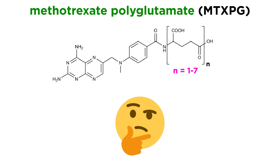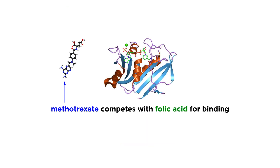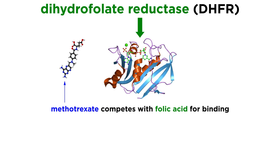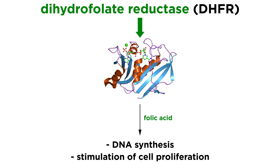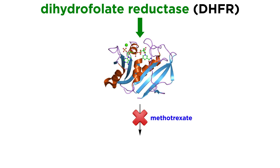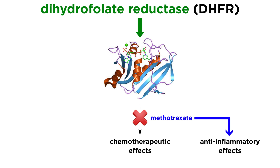So how exactly does a cancer drug treat rheumatoid arthritis? Methotrexate was originally designed to compete with folic acid in binding to dihydrofolate reductase, or DHFR. This important enzyme uses folic acid in the synthesis of DNA and stimulation of cell proliferation. Inhibition of this enzyme likely explains methotrexate's chemotherapeutic effects.